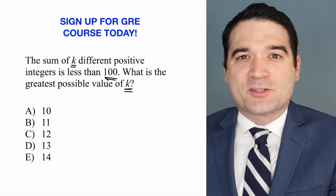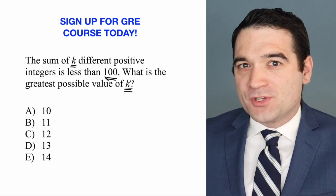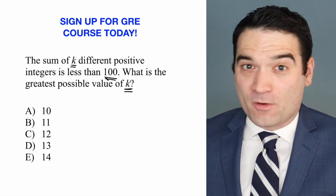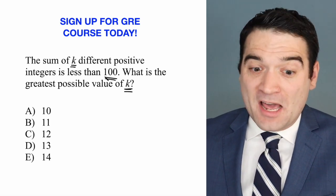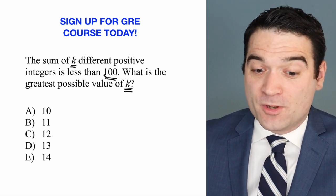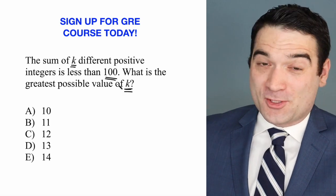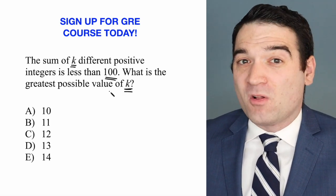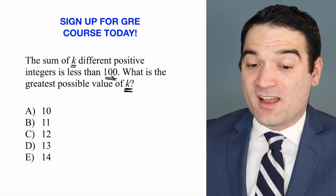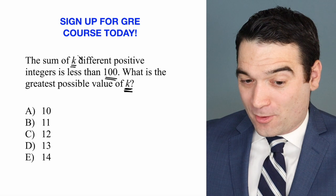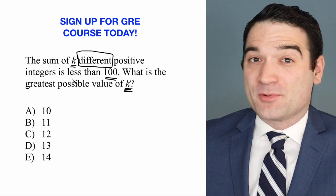Let's think about this logically. If we want to have a lot of numbers, do those numbers need to be very big or very small? Very small, right? Because if we had a lot of big numbers, we would overshoot the limit pretty quickly. So let's go to an extreme — let's make these numbers as small as possible. How many numbers would we need to stay under 100? One other important point is that these numbers need to be different.